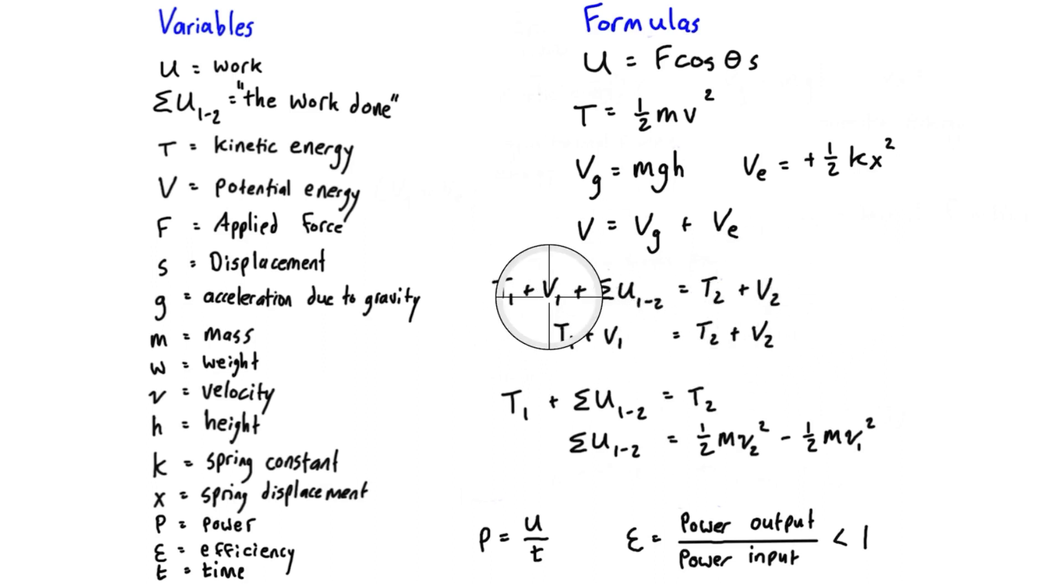This next line here is what we call basically just the conservation of energy equation, or conservation of mechanical energy. We have the kinetic and potential energy in state one, plus the work done between state one and two, will give us the kinetic and potential energy in state two.